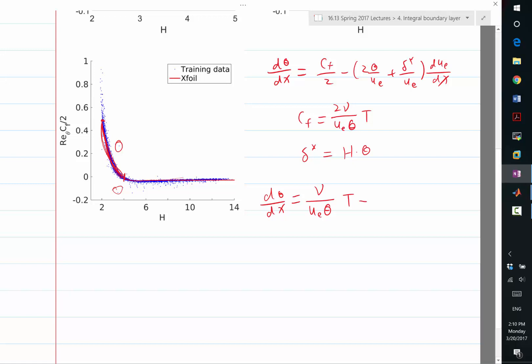So d theta dx is going to be equal to, not Cf, this is T, right? 2 cancels, and I get nu ue theta times T. And then, I think I messed it up, theta should be, no, no, theta is right, okay. So minus, kind of want to do the same transformation here. I want to divide everything by theta, so that I get theta squared, so I get the h factor. So, in fact, this becomes 2 plus h, so let me put everything outside.